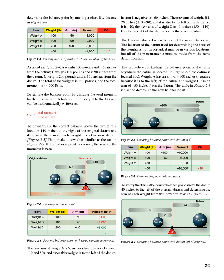To prove this is the correct balance point, move the datum to a location 110 inches to the right of the original datum and determine the arm of each weight from the new datum (figure 2-5), then make a new chart as in figure 2-6. The new arm of weight A is −60 inches (110 − 50), weight B is −20 inches (110 − 90), and weight C is +40 inches (150 − 110). The lever is balanced when the sum of moments is zero. The location of the datum is not critical, but all measurements must be taken from the same datum.